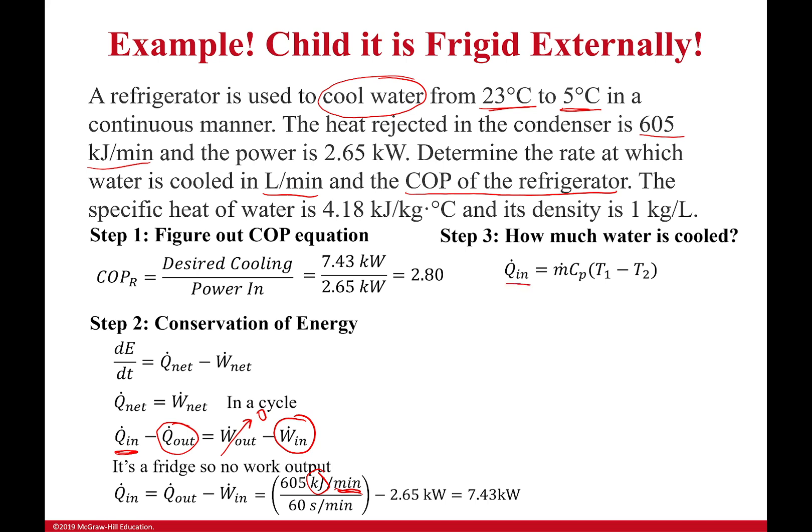This is enough to solve this. I rearrange and I get the mass flow rate is 0.0988 kilograms per second. Now it asked for liters per minute, so I'm going to have to figure that out in a second, but I got kilograms per second for now. Things to be careful with right here: